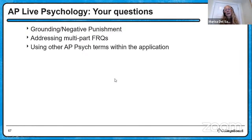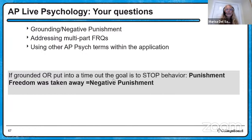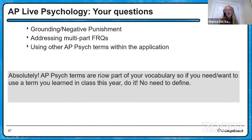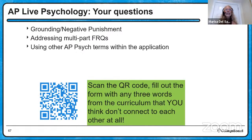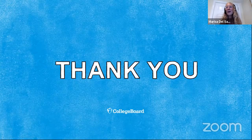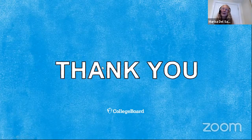A question about grounding and negative punishment: grounding is negative punishment. The goal is to stop the behavior, so it's punishment, and when you take away someone's freedom you're taking away something desirable — negative punishment. When addressing multi-part FRQs, separate each term into a different paragraph — that's sufficient. Using other AP Psych terms within the application is encouraged; this is part of your vocabulary now, so use terms you've learned without needing to define them. Feel free to scan the QR code, fill out the form with any three curriculum words you don't think connect, give us feedback and questions. Thank you so much for today — sorry I had to rush through, but I hope you have a chance to go back and look at the video. Have a great day.